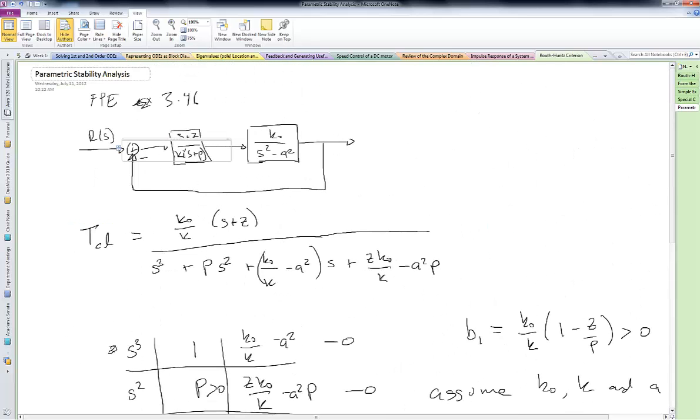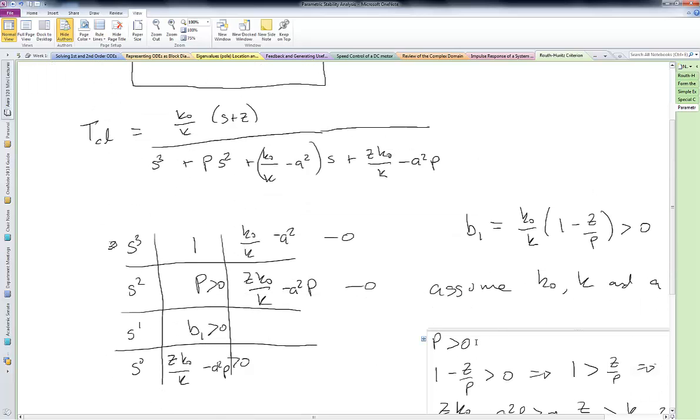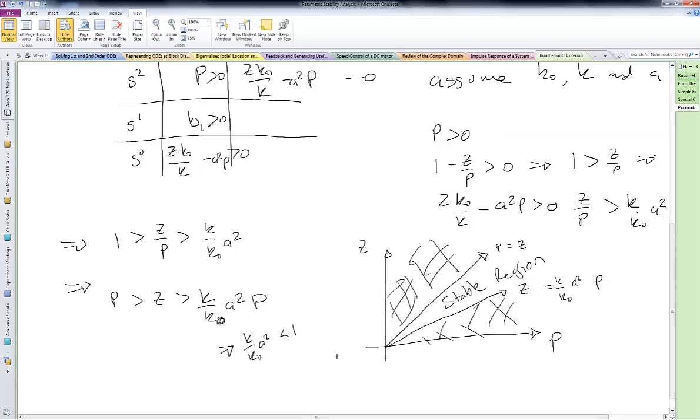Notice down here we found this relationship between P and Z, and P and Z actually go into our compensator up here. So I know that this says that P has to be positive, so then both Z and P have to be positive, and then I have to be bounded in this range for stability.